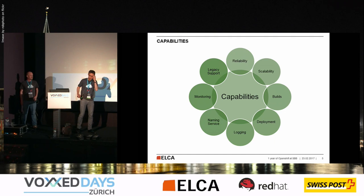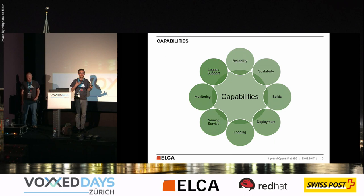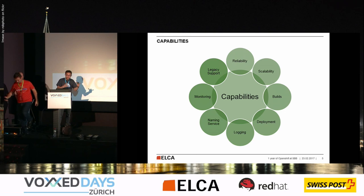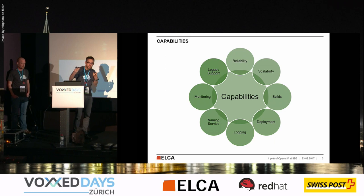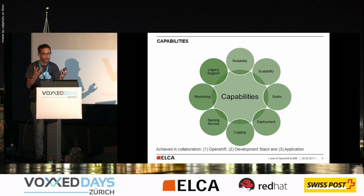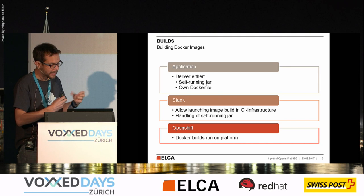For cloud projects to be successful, you need certain technical features — we call them capabilities. This includes reliability (if something fails, your application still has to run), scalability, build support, deployment support, logging, service discovery/naming, monitoring, and legacy support. These capabilities are important for your applications. Achieving them is a collaboration among OpenShift, the development stack, and the application itself. We'll look into some of them now.